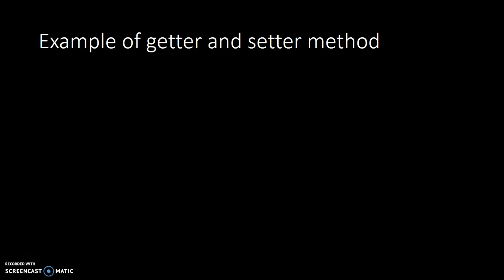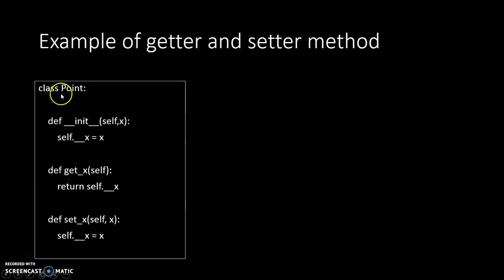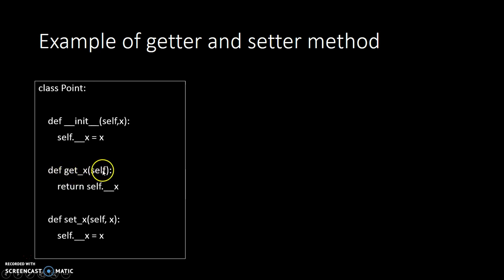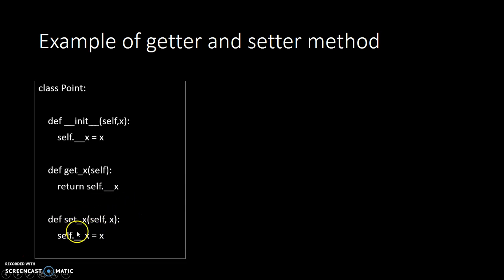Let's take an example of Getter and Setter methods. We have a class Point and an init method where we have declared one private variable X which is initialized by this variable X. We have another method, GetX, which is used to get the value — it will return the value of this private variable X. Here we are returning the private value of X, and the SetX method takes an argument to reinitialize or set the value of this private variable X.